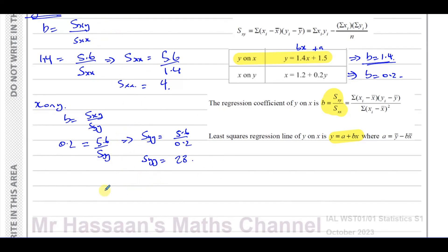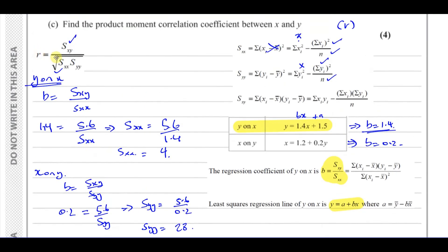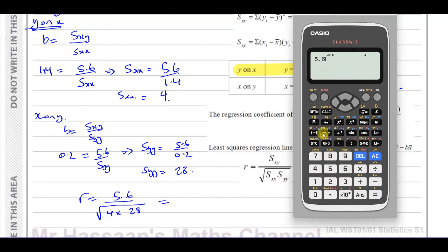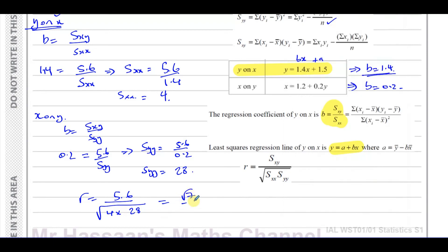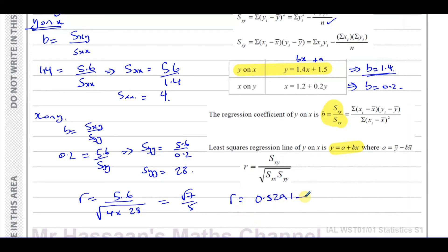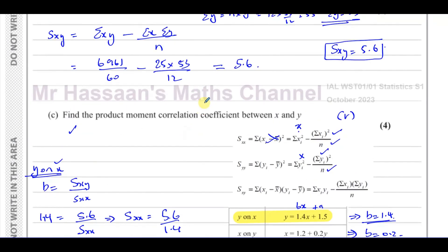Now we can find R. R equals SXY over the square root of SXX times SYY, which is 5.6 over the square root of 4 times 28. That gives us root 7 over 5. So R to 3 significant figures is 0.529. R equals 0.529 to 3SF is your final answer, unless otherwise stated. And that's the answer to part C.